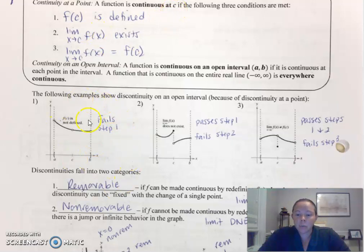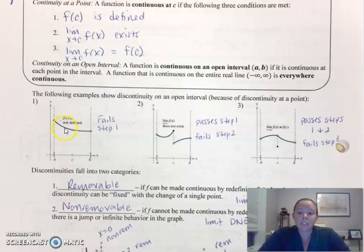Here's why you need the first one. f of C needs to be defined. You'll notice it fails step one because you do not have a defined value at C, so it's not continuous. You have to lift your pen or pencil off the page in order to connect these two points together, therefore not continuous.